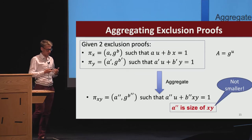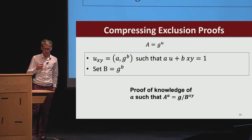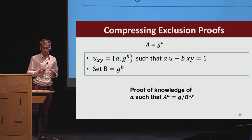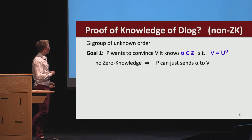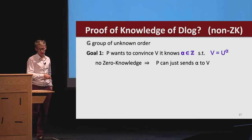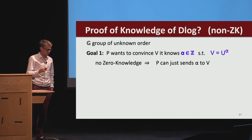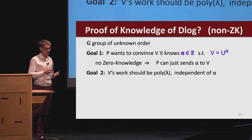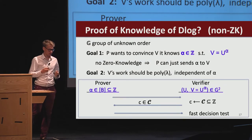What we would really like is to compress these proofs. Our core idea is to not give a to the verifier in the clear, but instead prove knowledge that such an a exists—and maybe this proof can be short. So what we need is basically a proof of knowledge of discrete logarithms in groups of unknown order. Alpha here is an integer, maybe very large. The goal is not zero knowledge—it's really about efficiency. The verifier's work and the communication should ideally be constant size, independent of alpha. So we develop a succinct argument of knowledge of this statement.